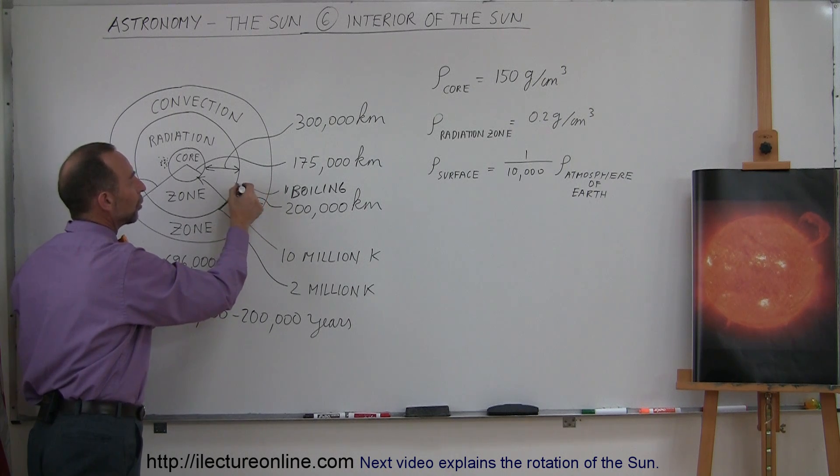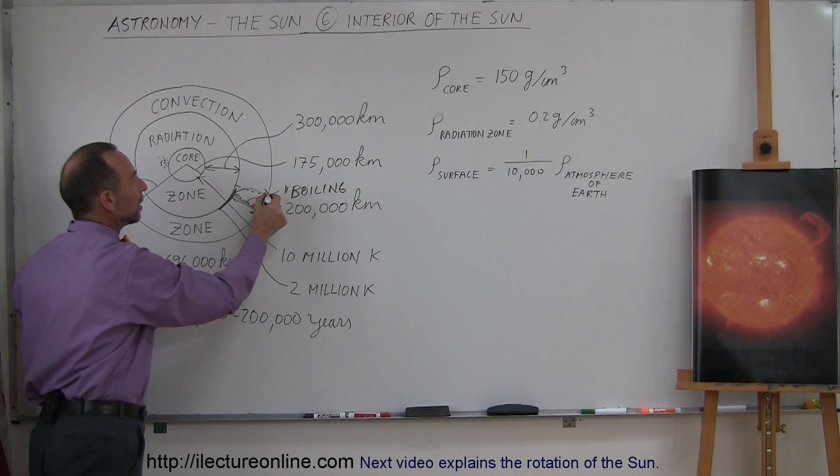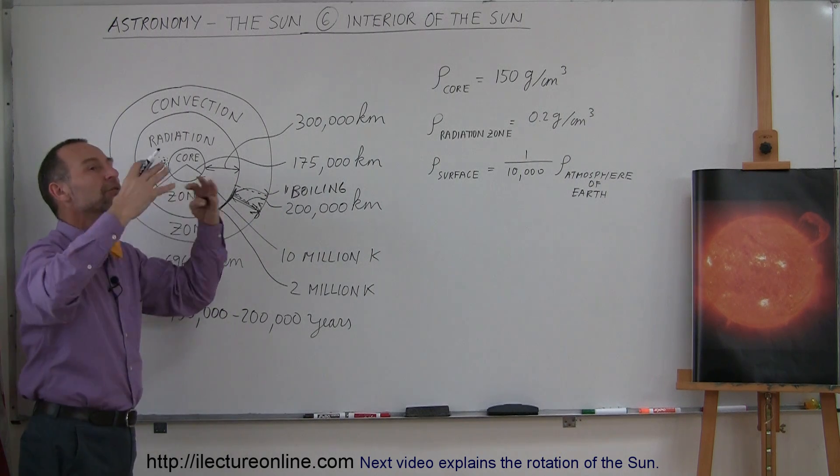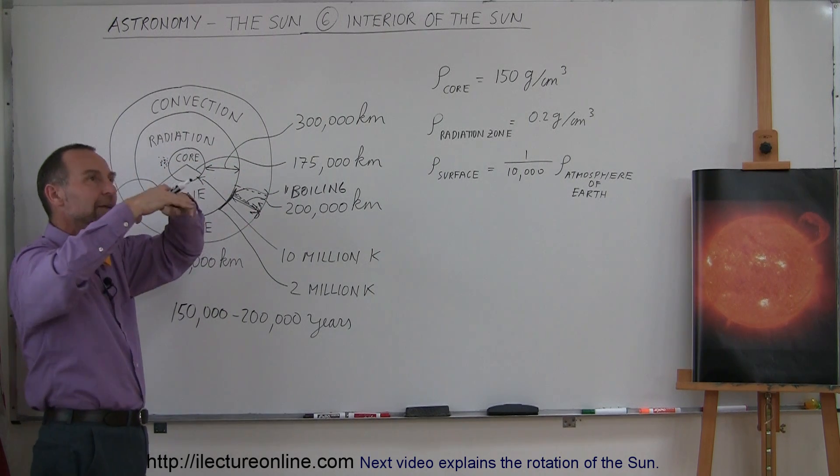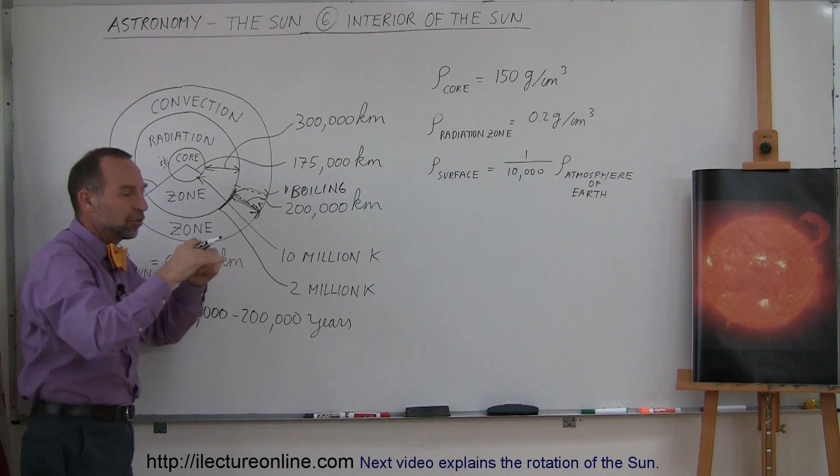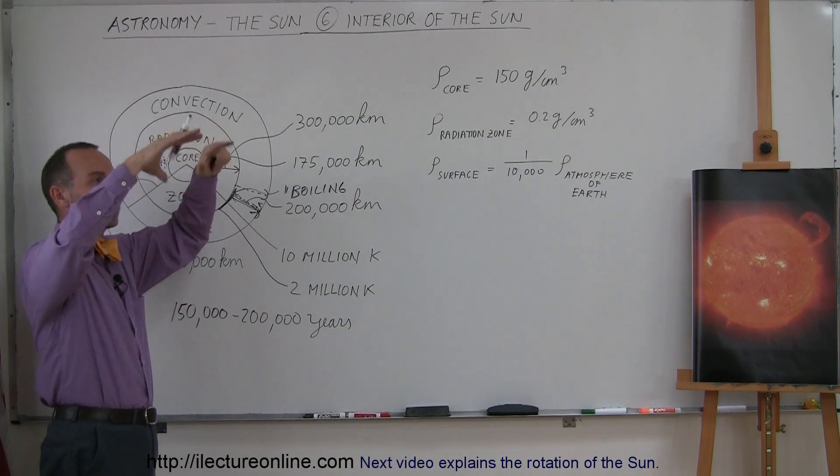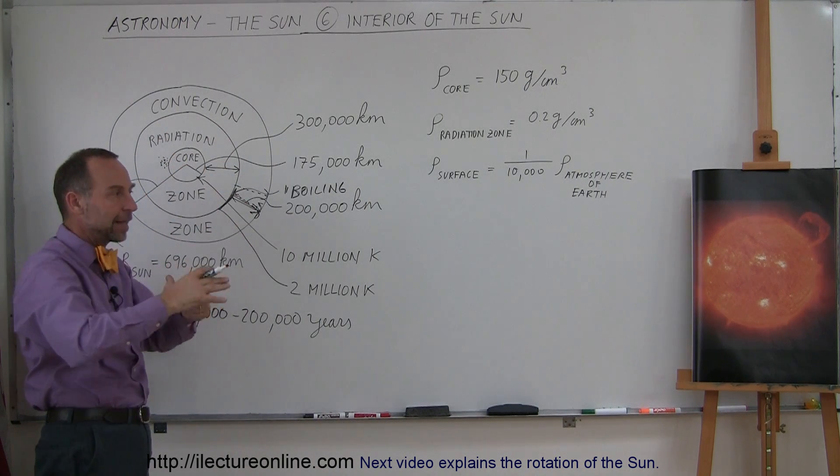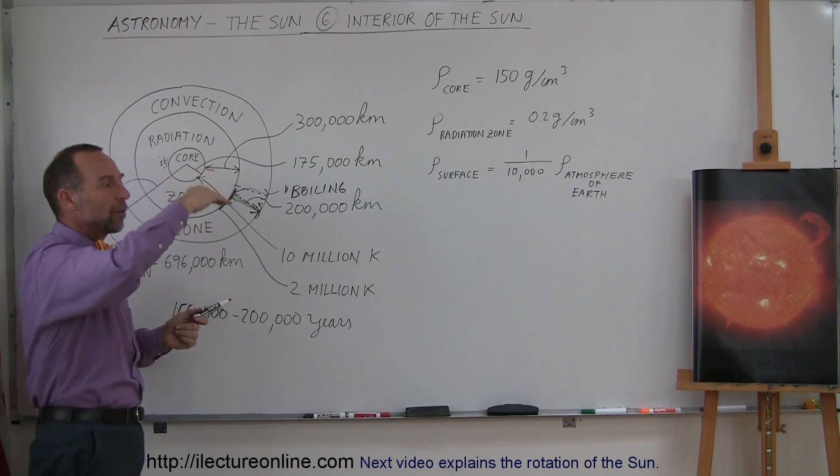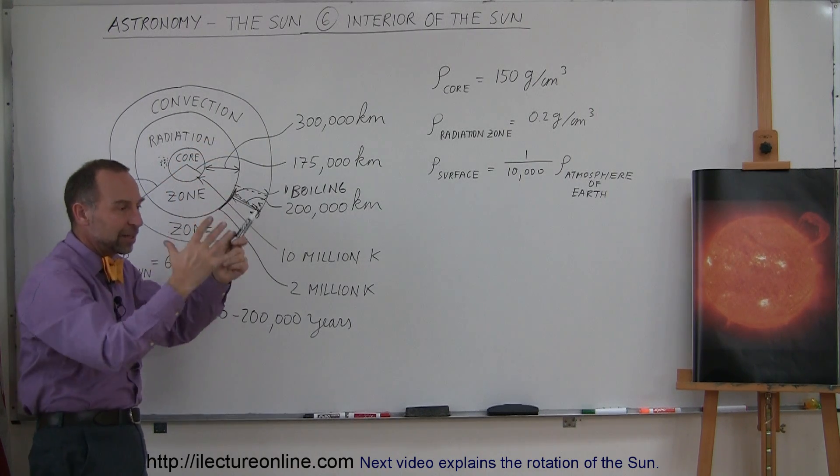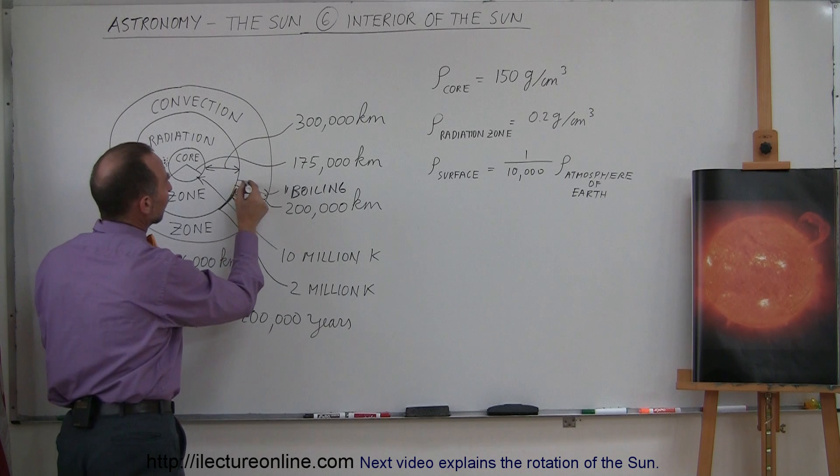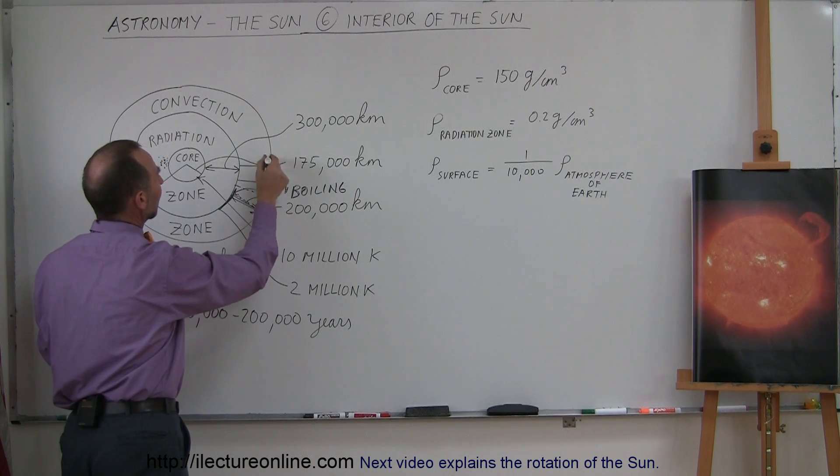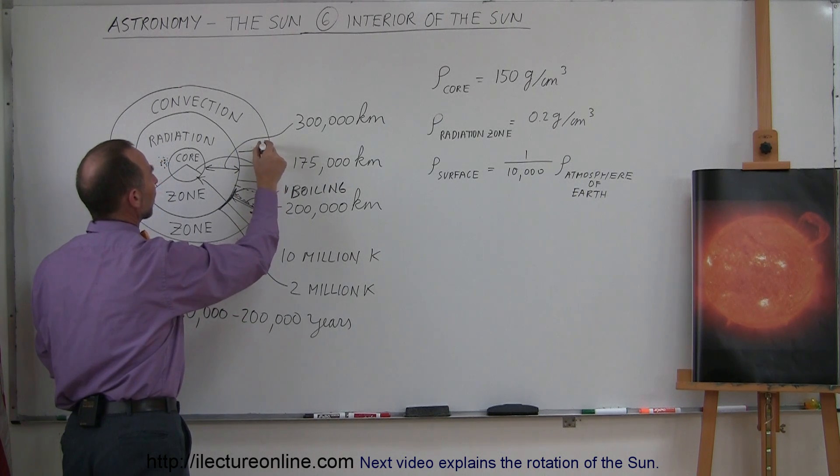And so this happens in all these various places where the material bubbles up. And then the gases at the surface of the Sun give out the energy, they become cooler and sink back down. And this happens all over the Sun. These granules bubble up and then sink back into the Sun. And so it has this convection action all around, everywhere on the whole surface of the Sun.